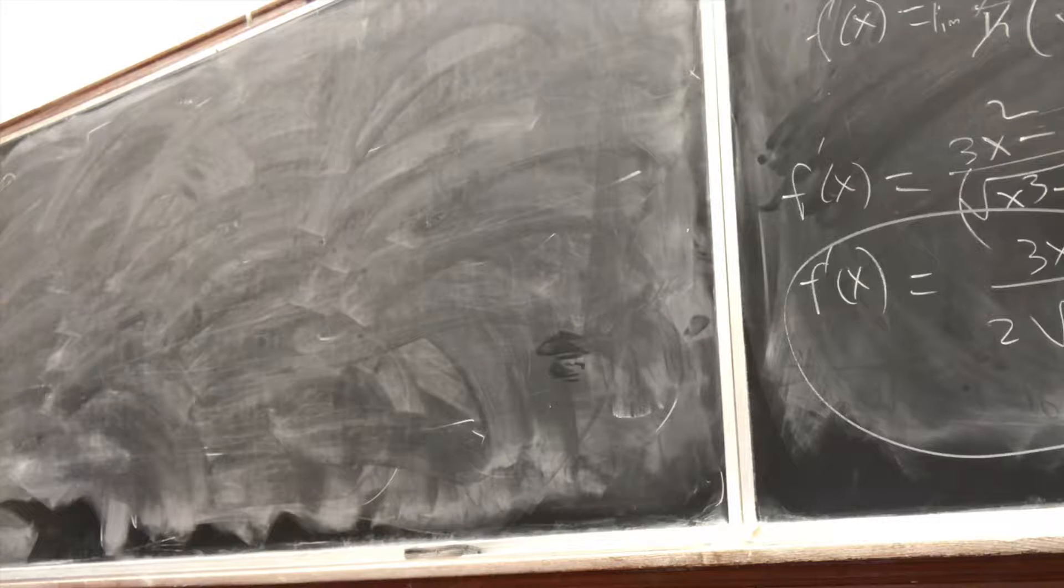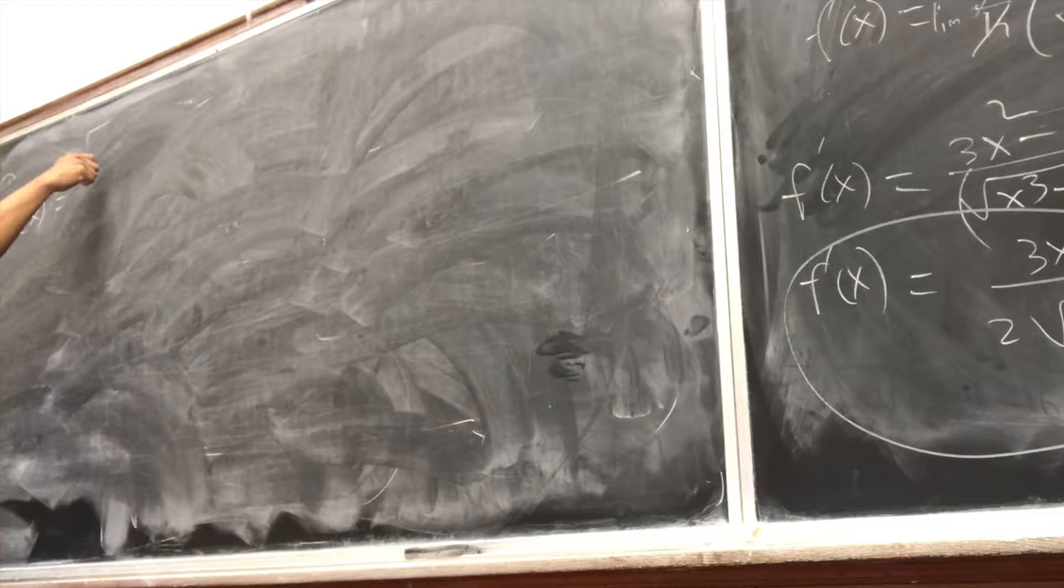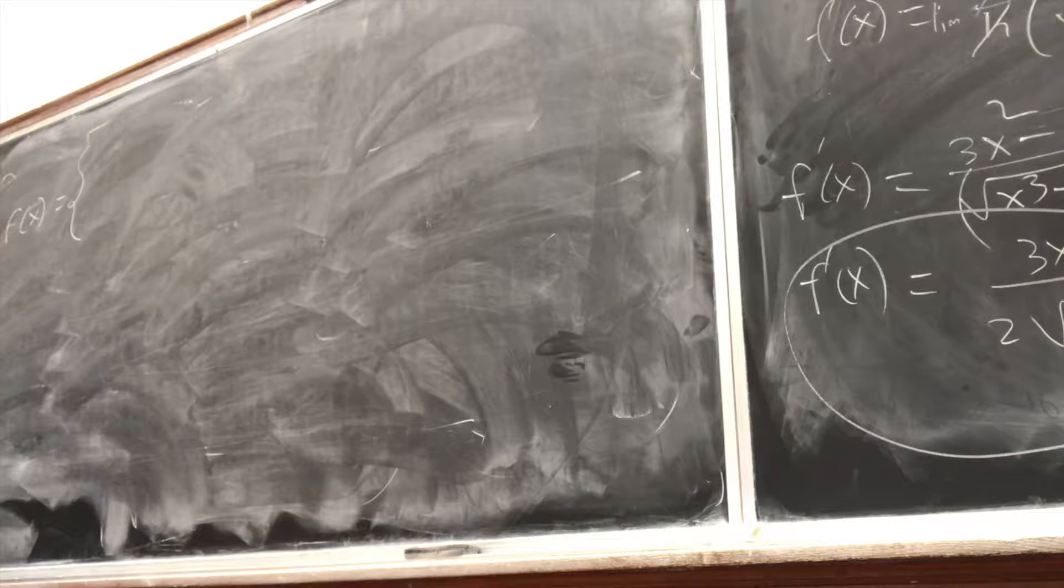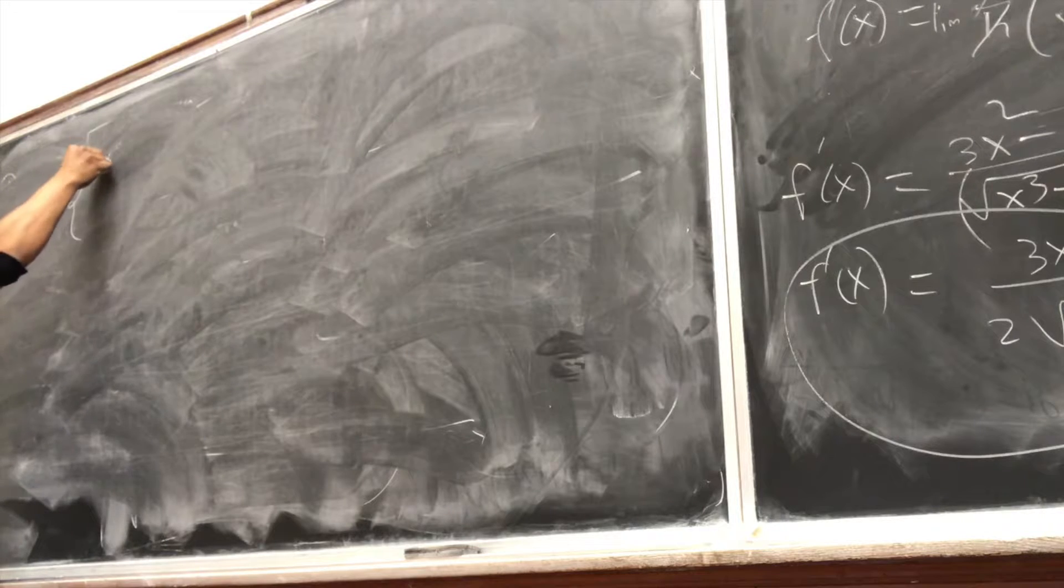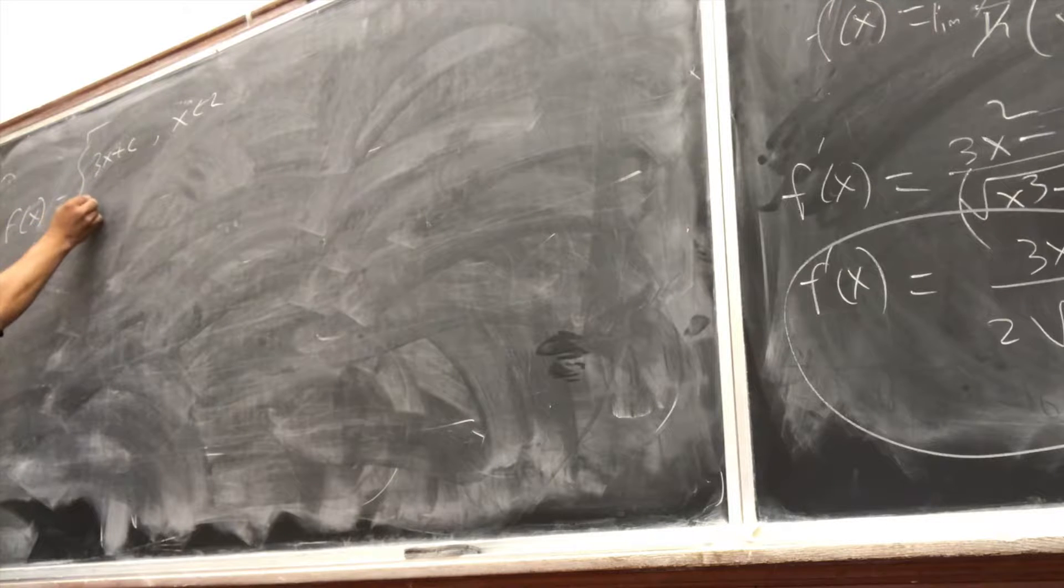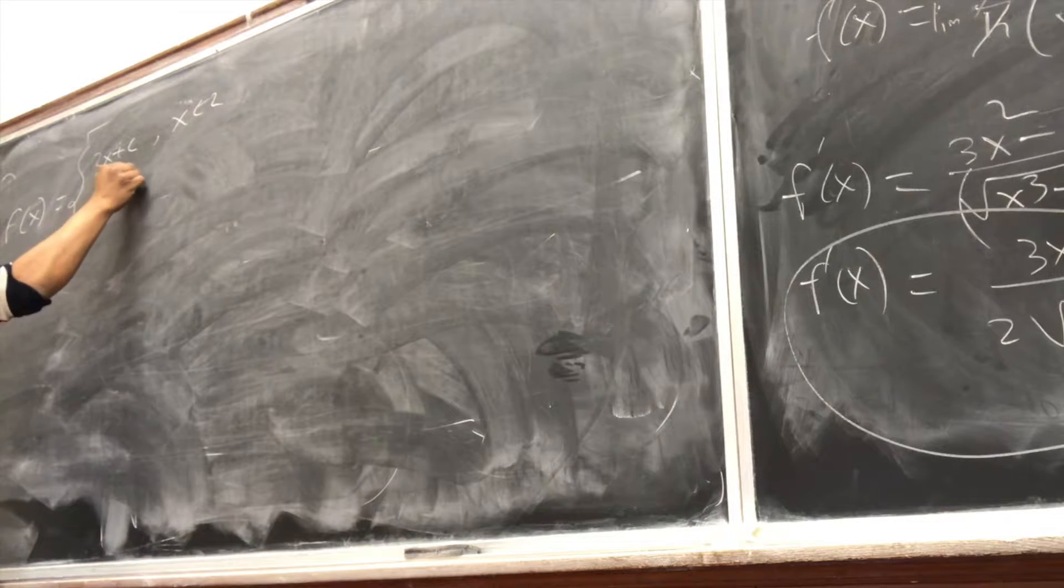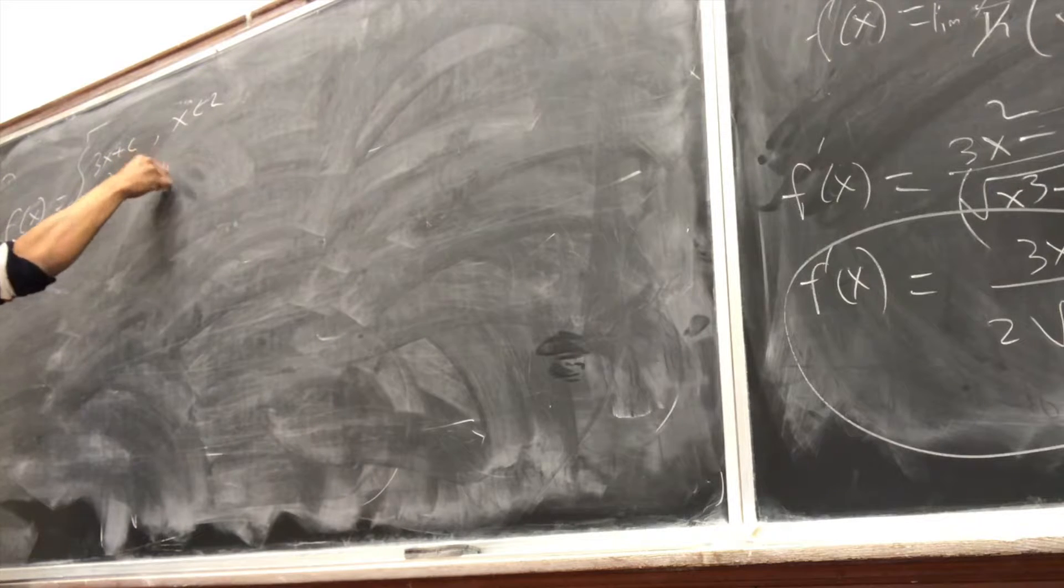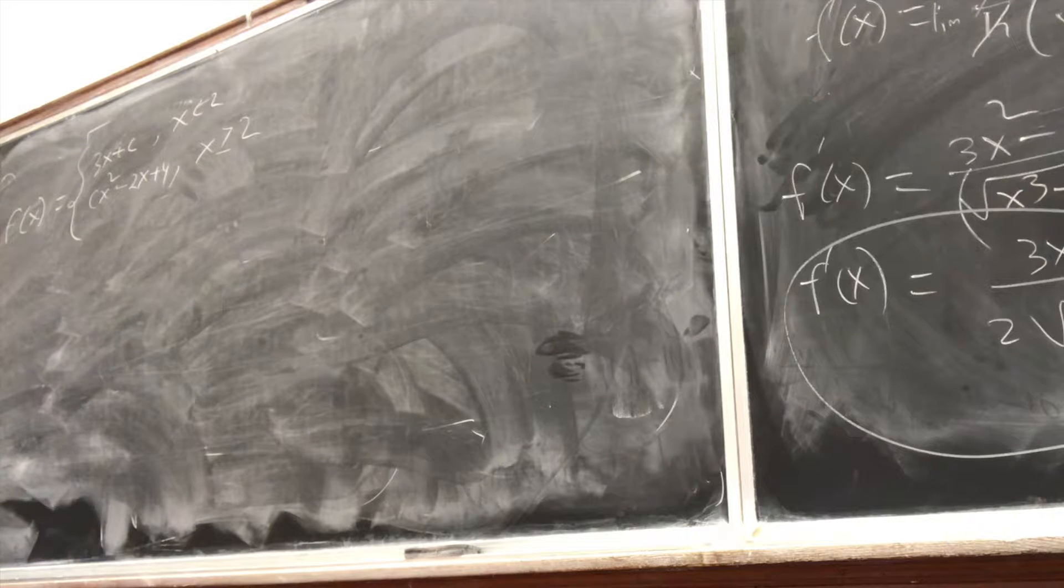Number 2 is: for what value of the constant c is the function f(x) continuous from negative infinity to positive infinity? f(x) = 3x + c when x is less than 2, and f(x) = cx² - 2x + 4 when x is greater than or equal to 2. Did I write it correctly? Yes.